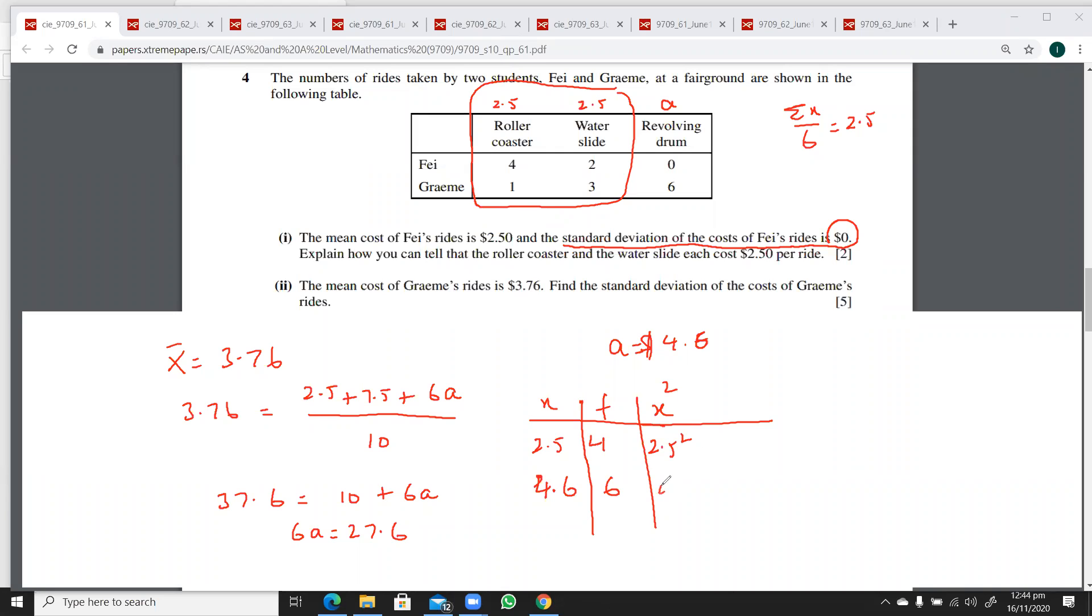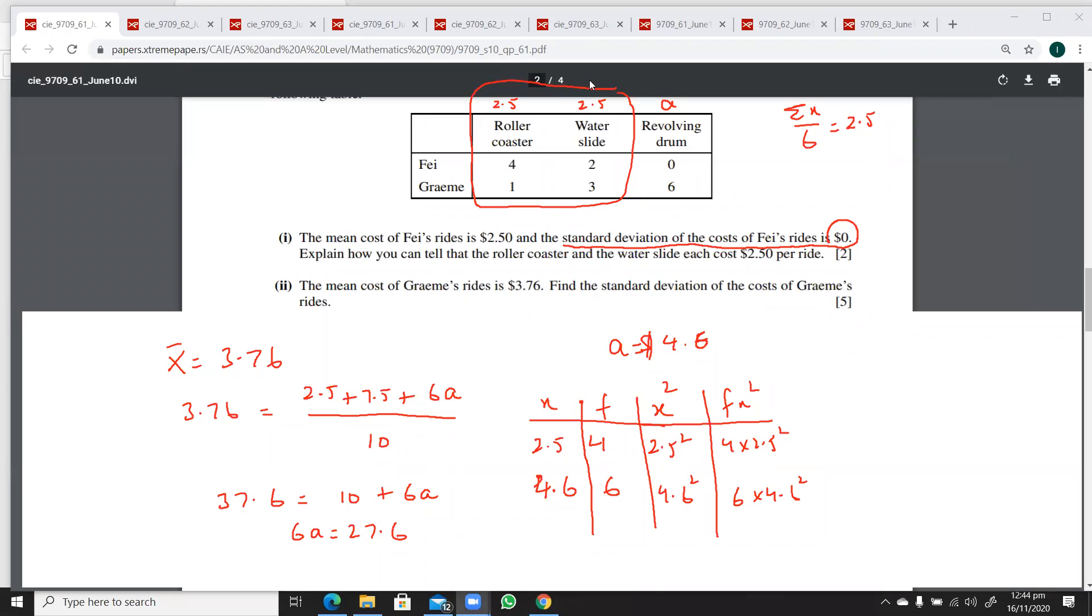So that's $2.50 squared, then your fx squared is 4 times $2.50 squared, and this is 6 times $4.60 squared.